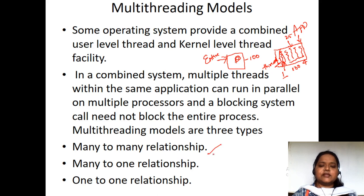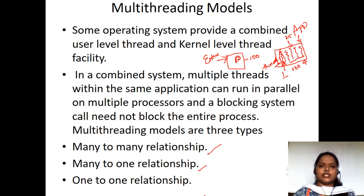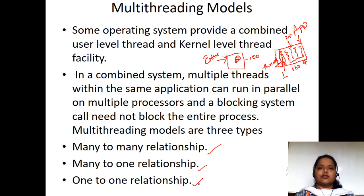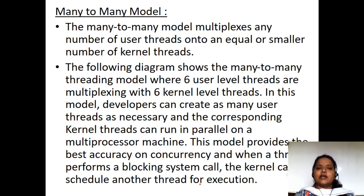How many models are there? Basically, there are three different types of multi-threading models. The first one is the many-to-many relationship, the second one is the many-to-one relationship, and the third one is the one-to-one relationship. We will see them one by one.